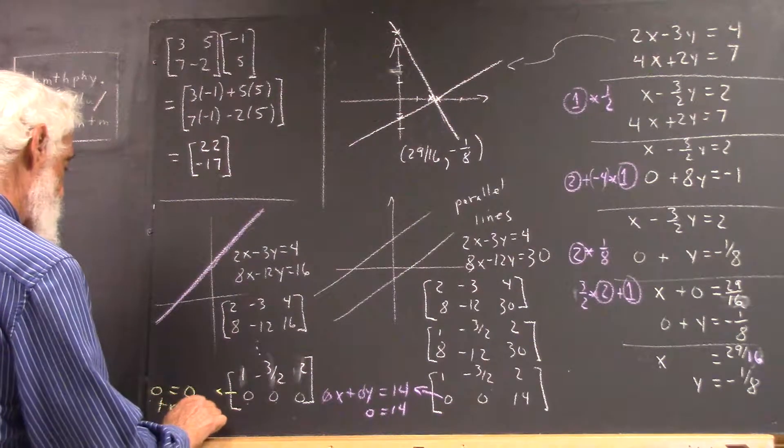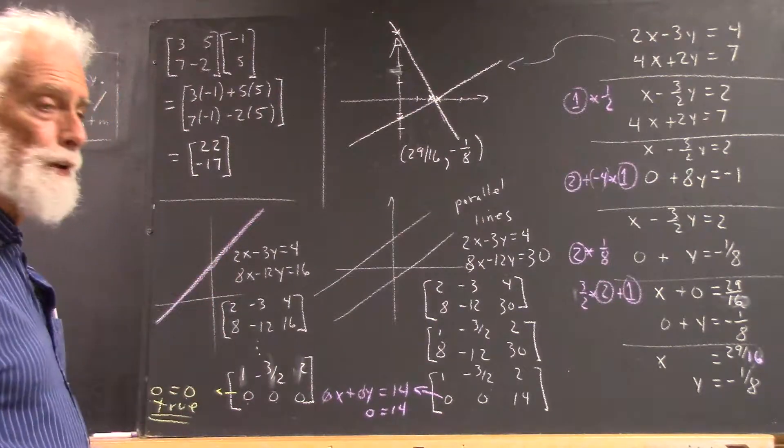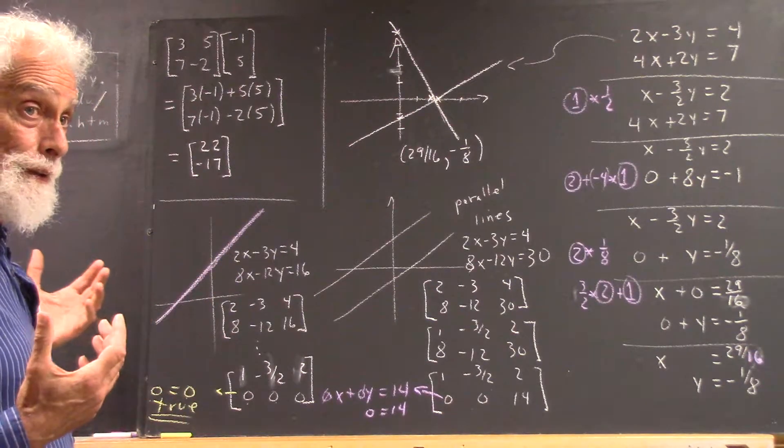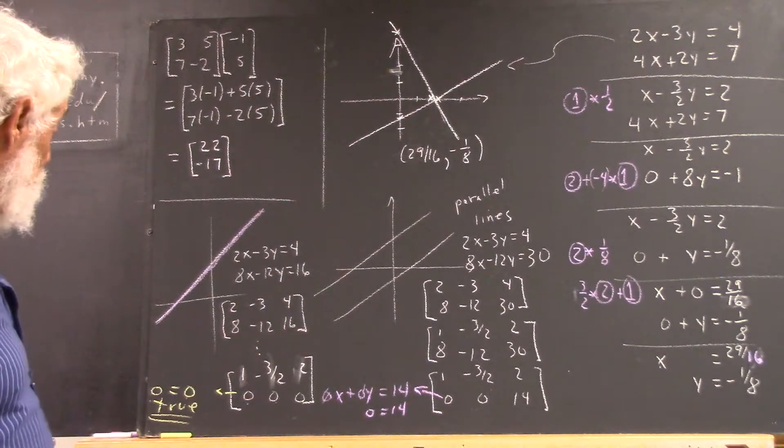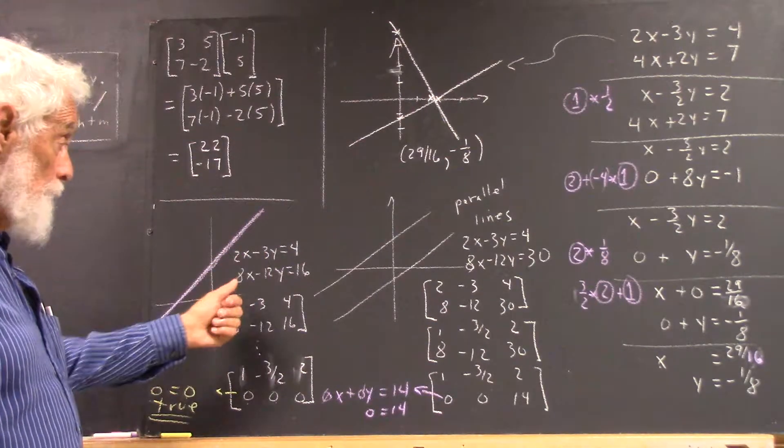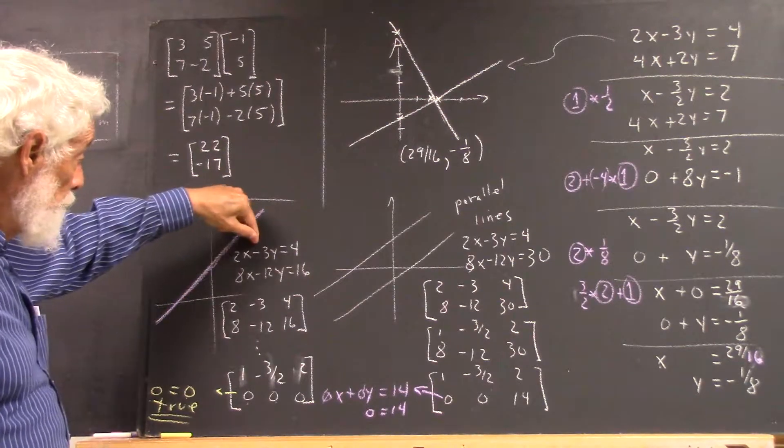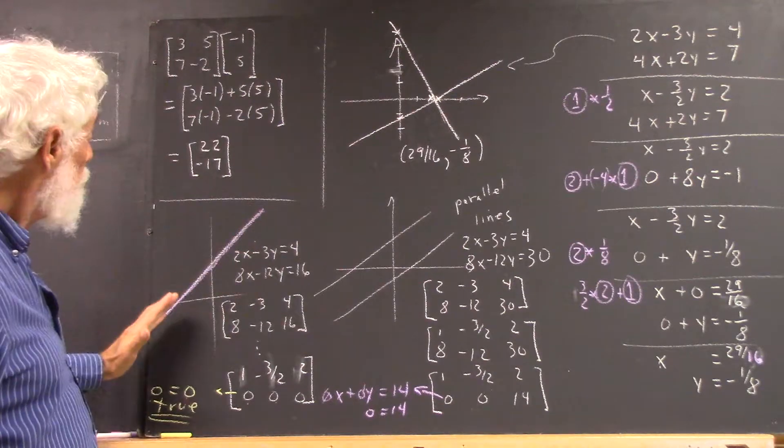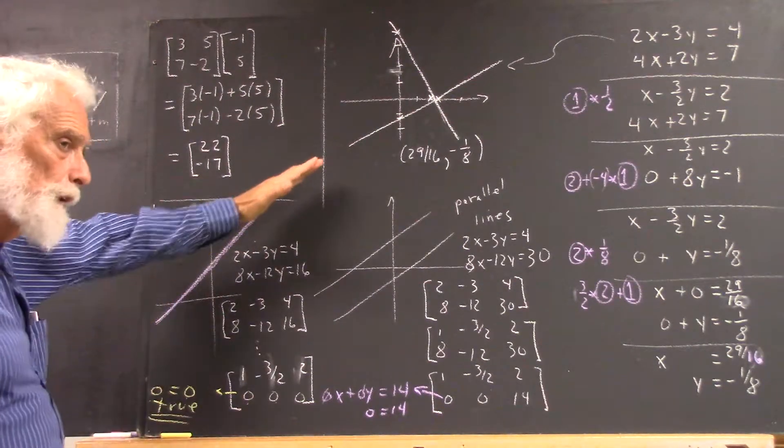which means that these equations give you lines that not only intersect, but they intersect at every point. Any x and y that satisfies the first equation automatically satisfies the second equation. So every point on the graph of this equation is a point on the graph of this equation, and vice versa. So your two lines coincide, and you have infinitely many solutions.